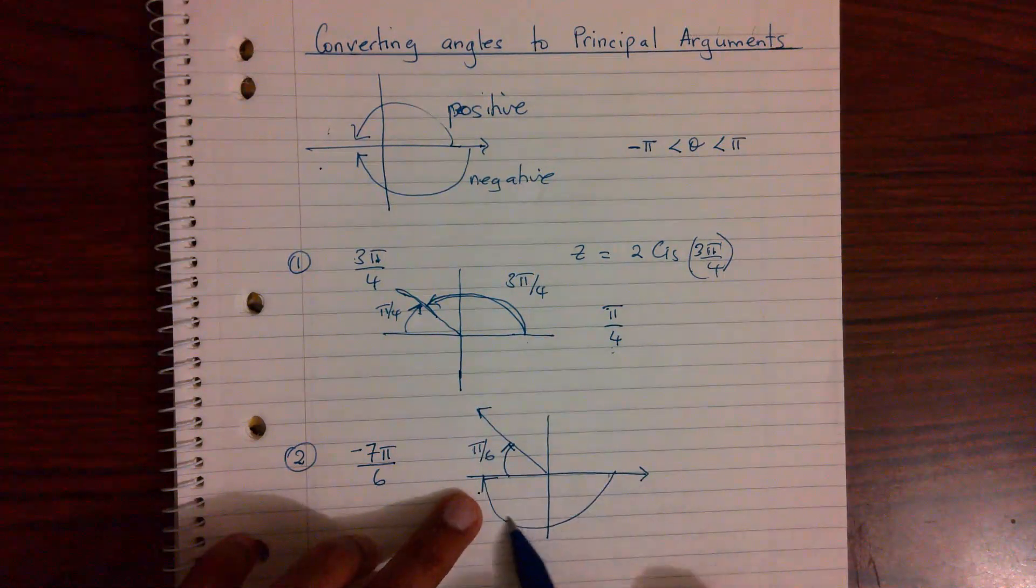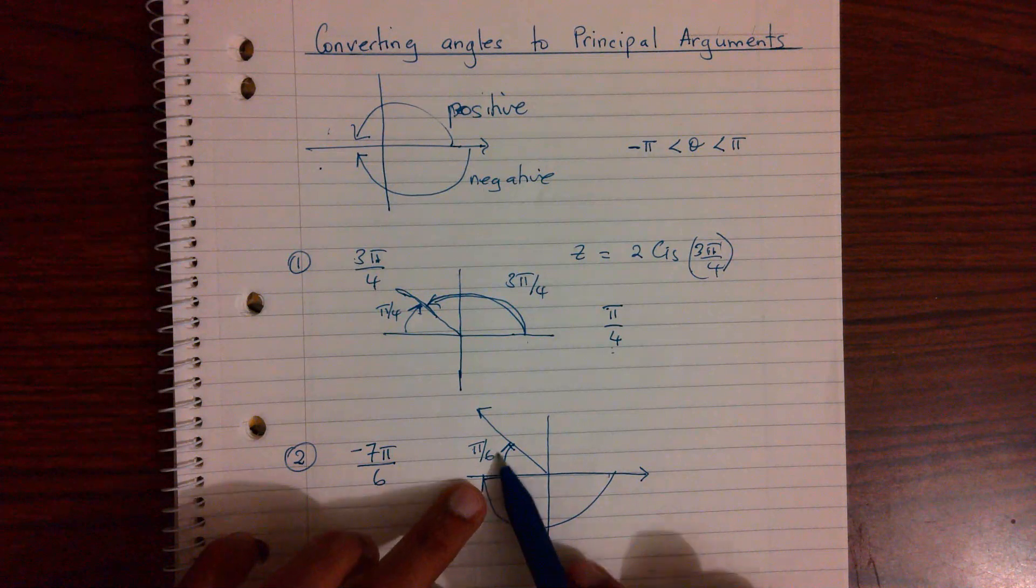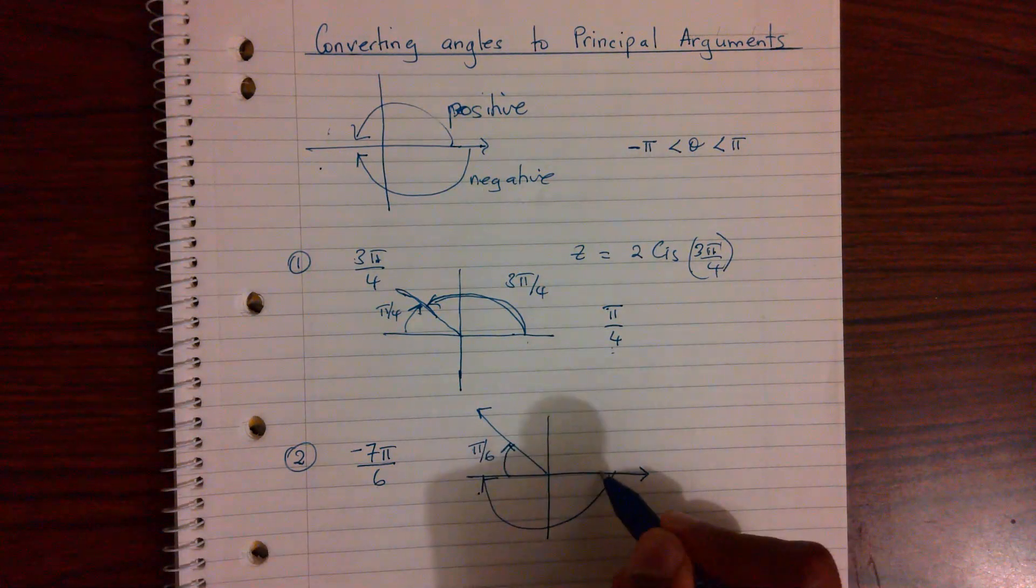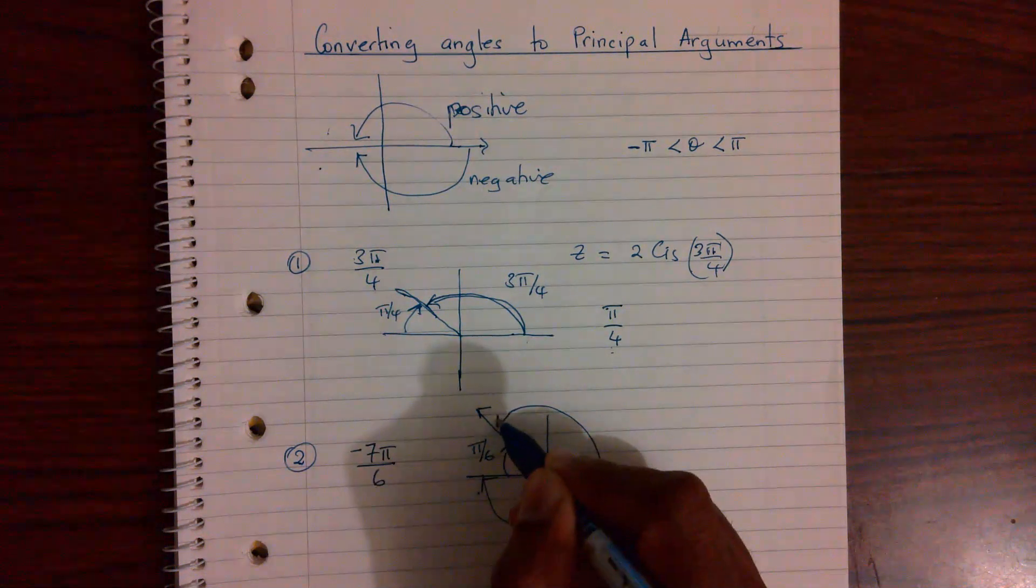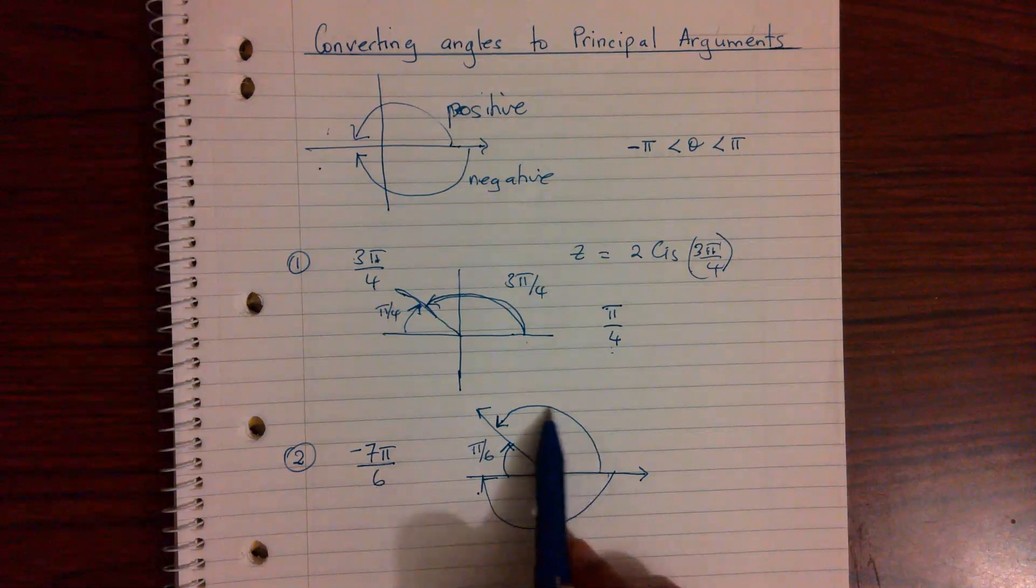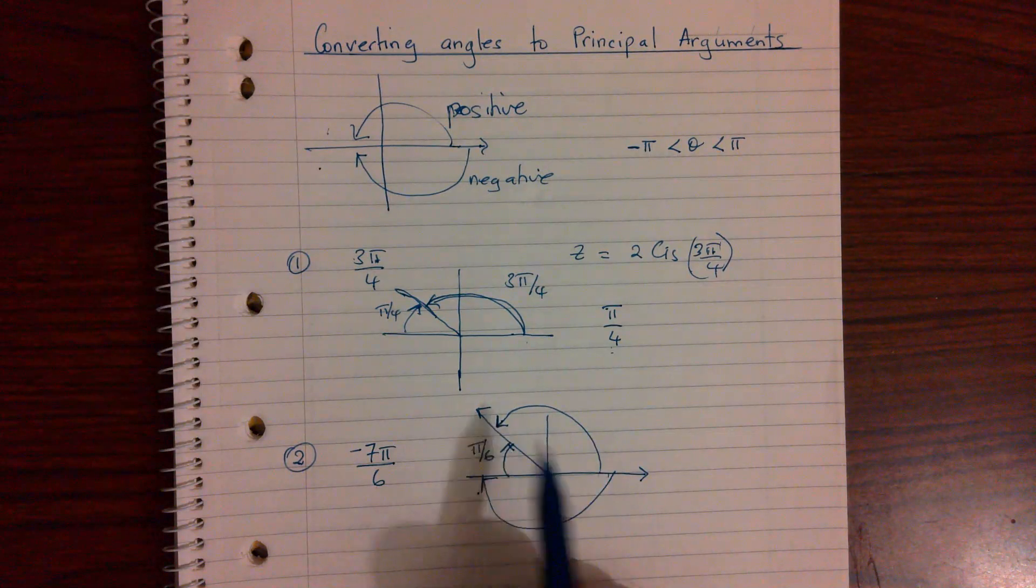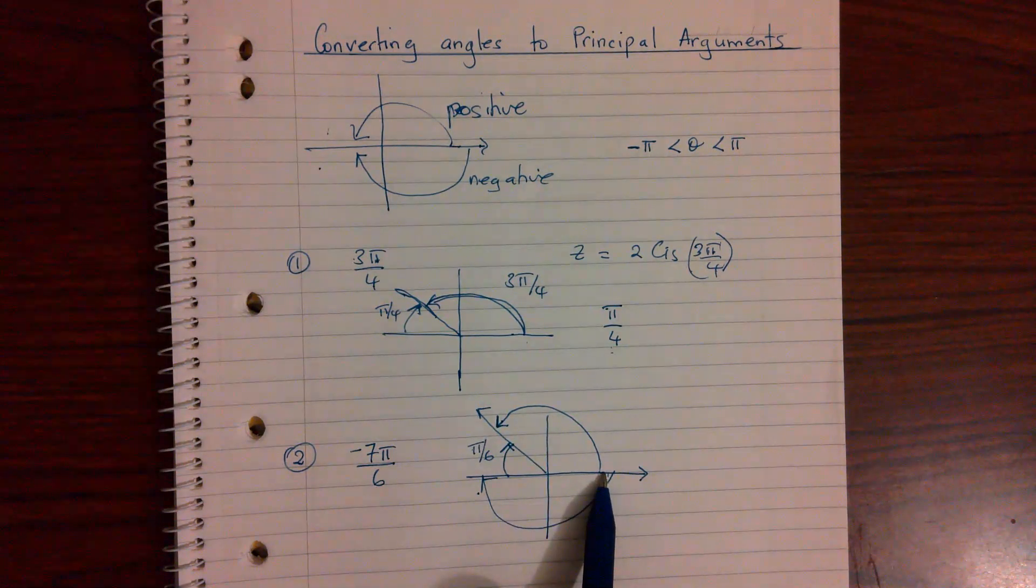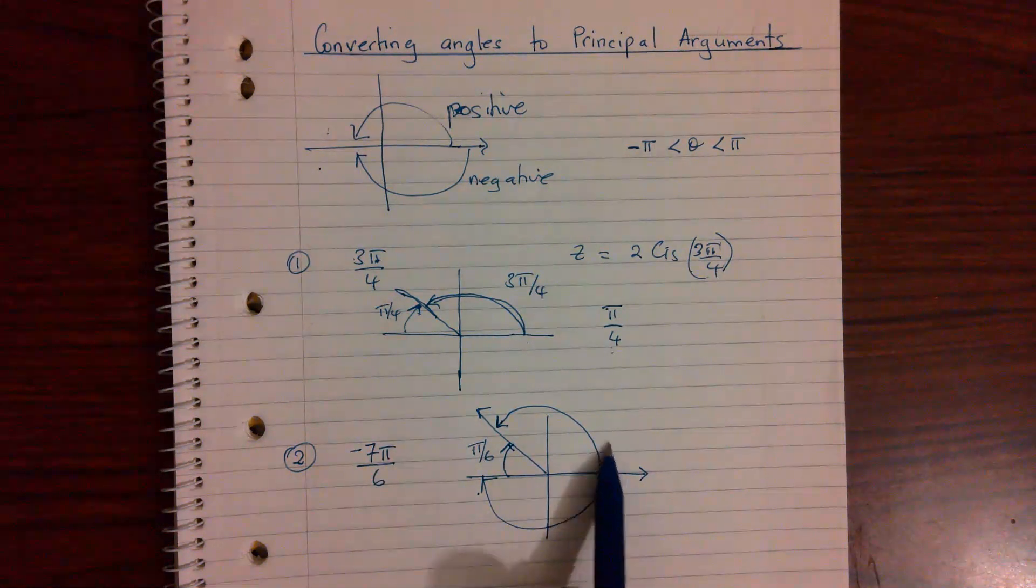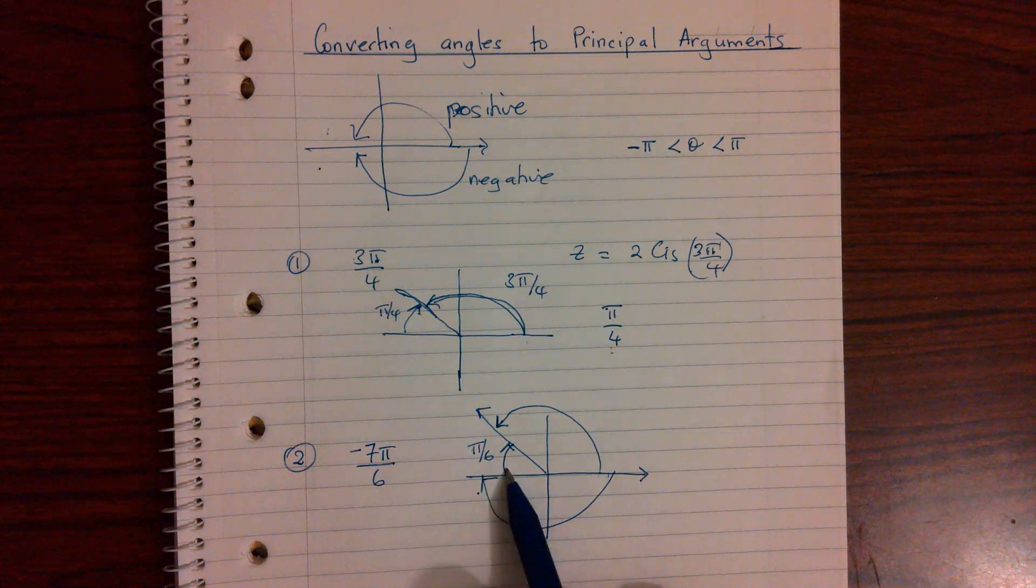Now as you can see, this whole angle goes over the 180 or the π. Therefore I should write this, or take this as my principal argument, an anti-clockwise angle that goes from here to here. We've taken the π and divided into 6 pieces. So this whole thing is 6 pieces.